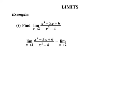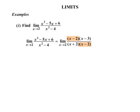Instead, let's factorize. Factorize the top: we need factors of positive 6 that add to give minus 5, so we need minus 2 and minus 3. On the bottom, x squared minus 4 is a difference of two squares — that's (x plus 2)(x minus 2). Now the (x minus 2) factors cancel, and we simplify.